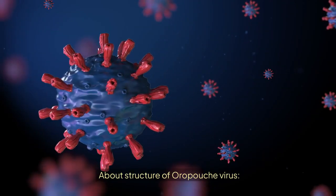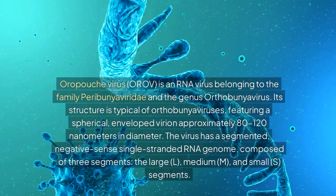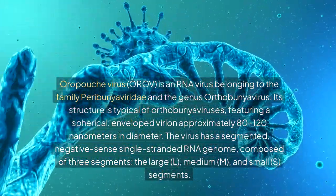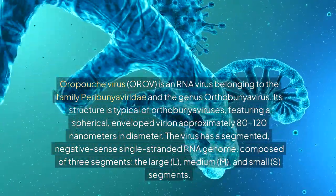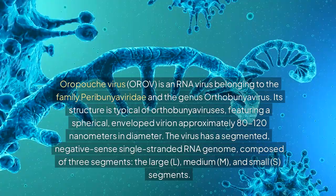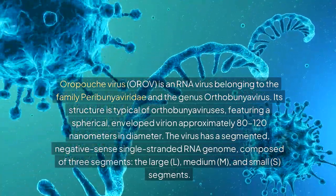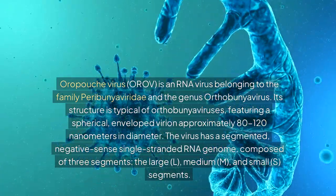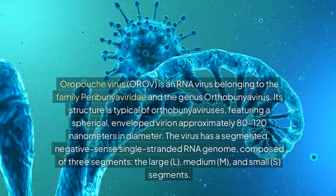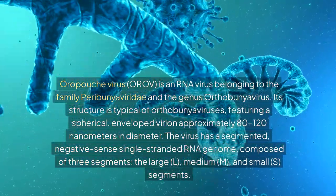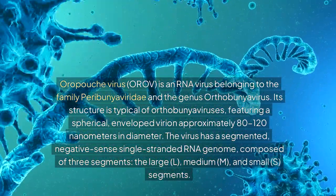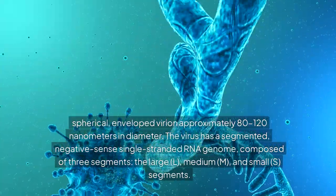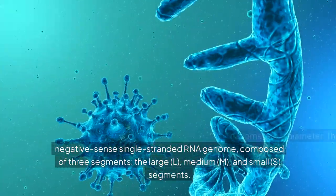About the structure of Oropouch virus. Oropouch virus (OROV) is an RNA virus belonging to the family Peribunyaviridae in the genus Orthobunyavirus. Its structure is typical of Orthobunyaviruses, featuring a spherical, enveloped virion approximately 80–120 nanometers in diameter. The virus has a segmented, negative-sense single-stranded RNA genome composed of three segments: the large (L), medium (M), and small (S) segments.